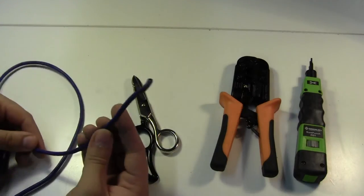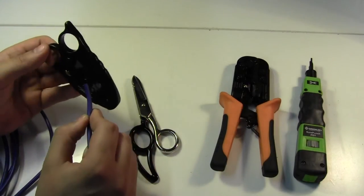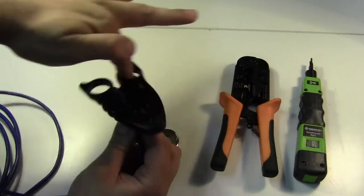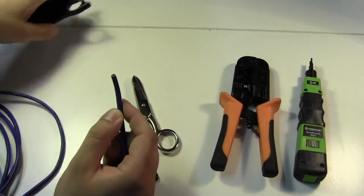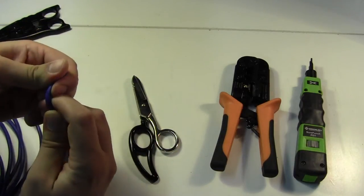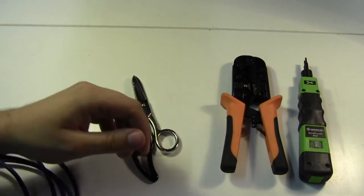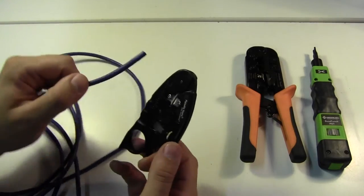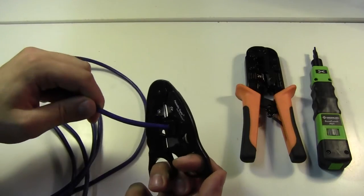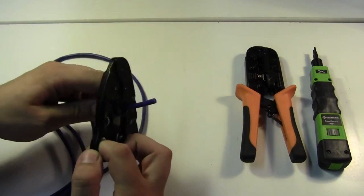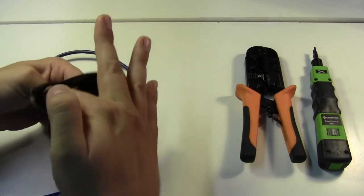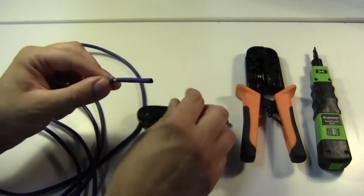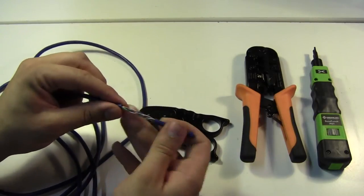The stripper on this is actually much nicer. Given some scrap Cat 5e cable, you just run it into the stripper there, spin it a couple times, and it's scored. And what it does is it scores it, and then you can crack it and take it off.